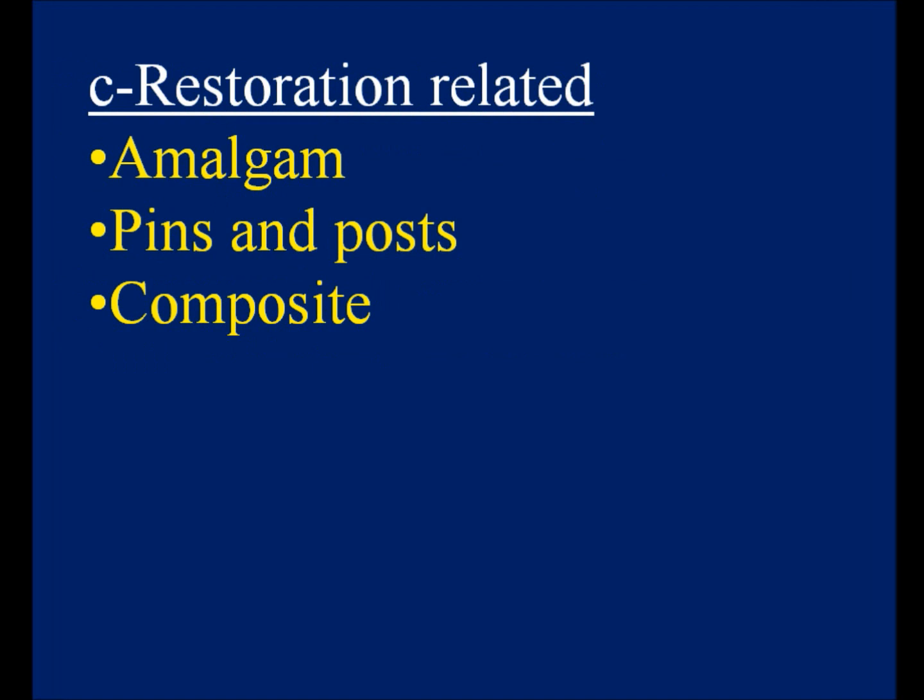C. Restoration-related. Amalgam: silver alloy that tarnishes may discolor the tooth structure, which is difficult to treat. Pins and posts: metal pins and posts may show through composite restorations. Composite: microleakage around composite fillings may discolor the tooth due to entrance of bacteria and fluid through the gap between the tooth and filling. Treatment is by replacing the filling.